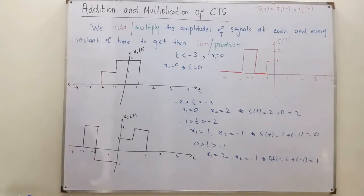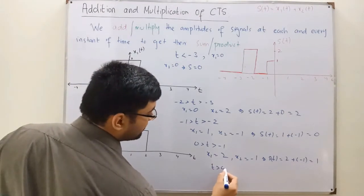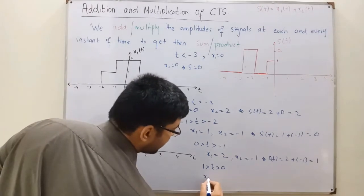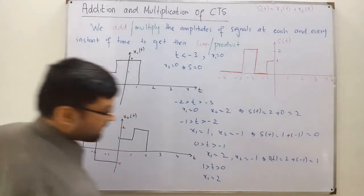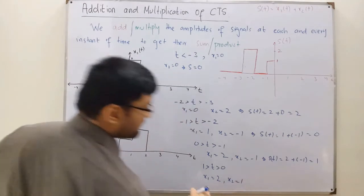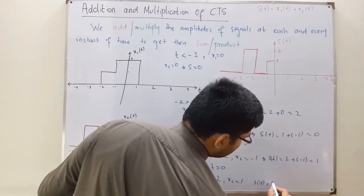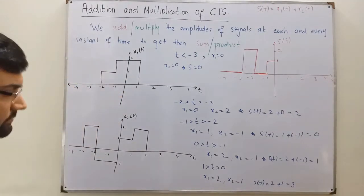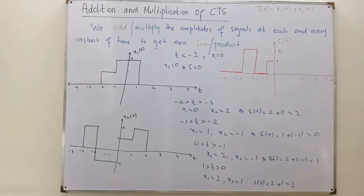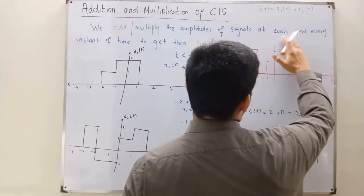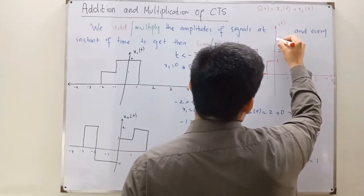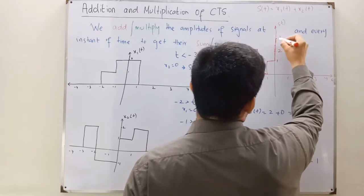From 0 to 1: when t is greater than 0 and less than 1, x1 is 2 and x2 is 1. So the sum equals 2 plus 1, which equals 3. From 0 to 1 the sum would equal 3, and now there is a jump to 3.